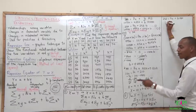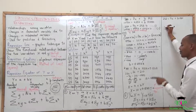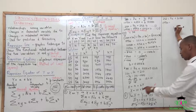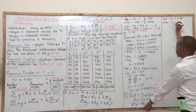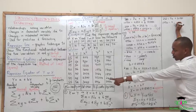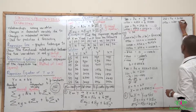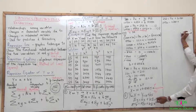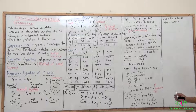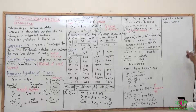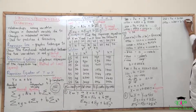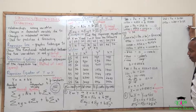Then we have the second equation. The summation of xy is 10,920, equal to a times the summation of x, which is 280, plus b times the summation of x squared. The summation of x squared in this case is 11,100.